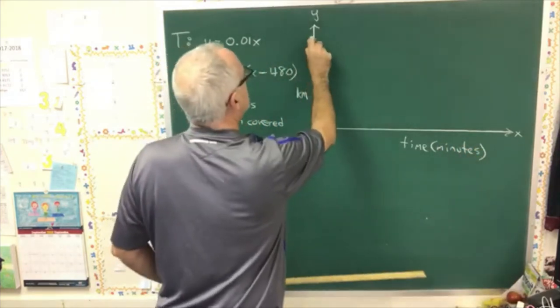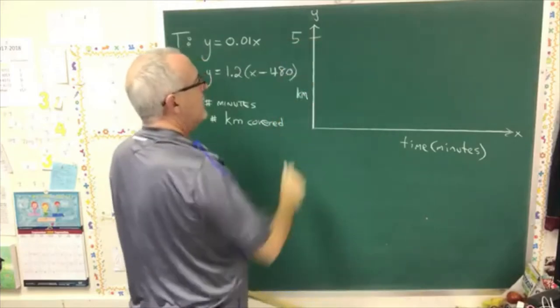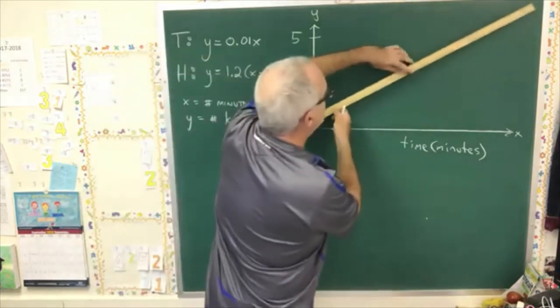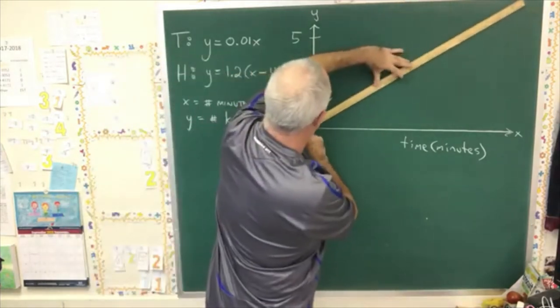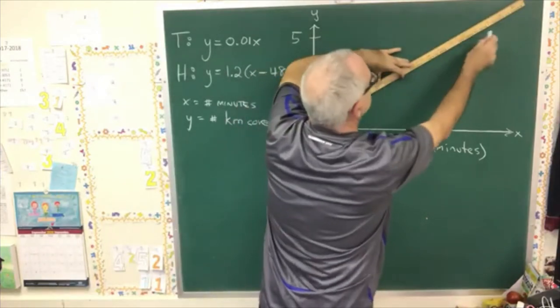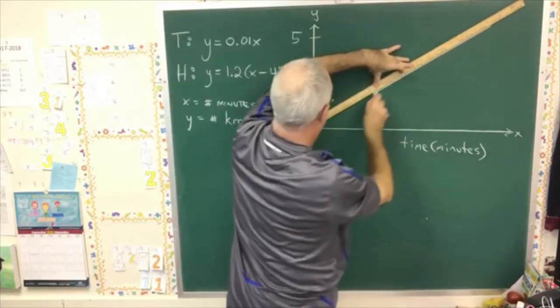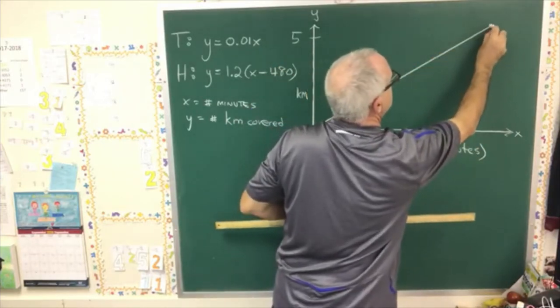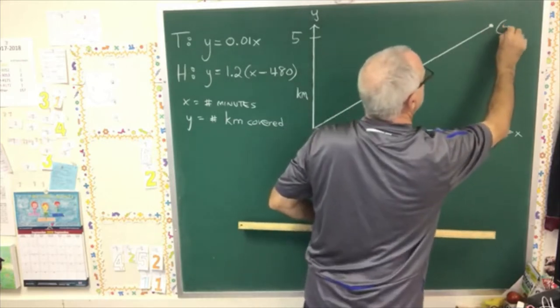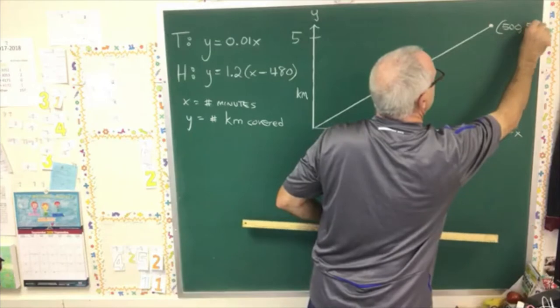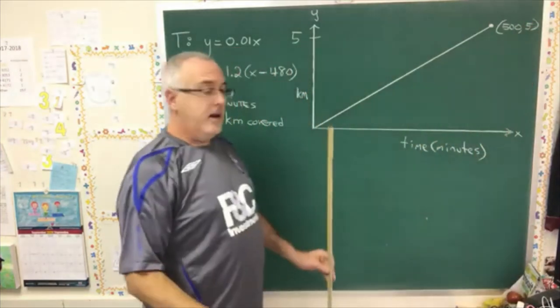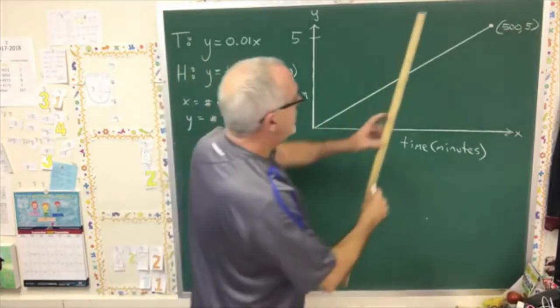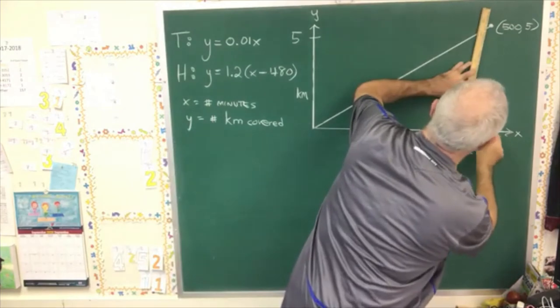I'll show 5k on the y-axis. What happens is the tortoise starts from time 0 and eventually gets to this 5k level. And we already know that takes 500 minutes. The hare has a 0 of 480. So, it starts way over here. So, this is 500.